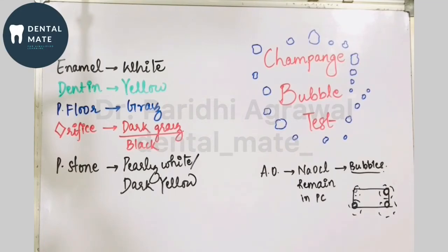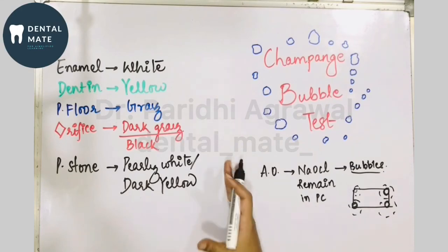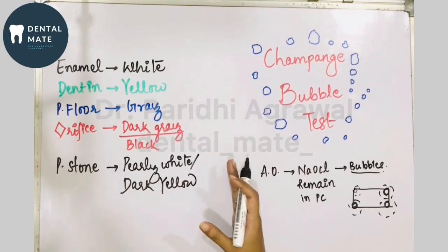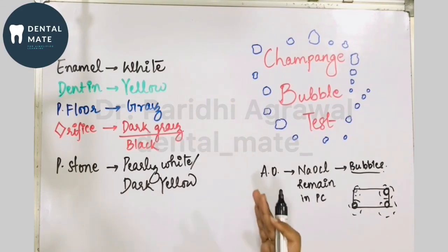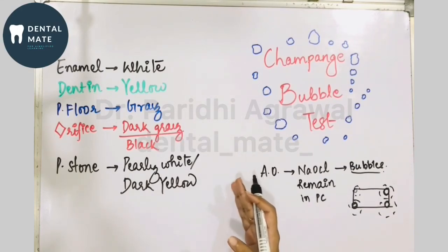So this is a diagnostic or indicative test for the root canal orifice. Next, we are talking about the clinical guide to color change. We have seen in the laws of access opening the law of color change — that the color of the pulp chamber is always darker than the walls.